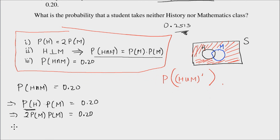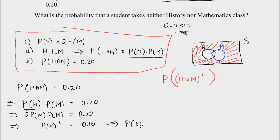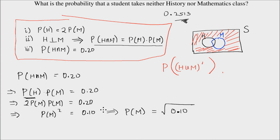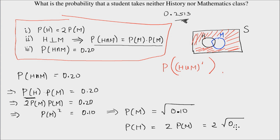Divide both sides by two, so I have P(M) squared equal to 0.10, which implies P(M) is equal to the square root of 0.10. And from number one, P(H) is twice P(M), which would be equal to twice the square root of 0.10.